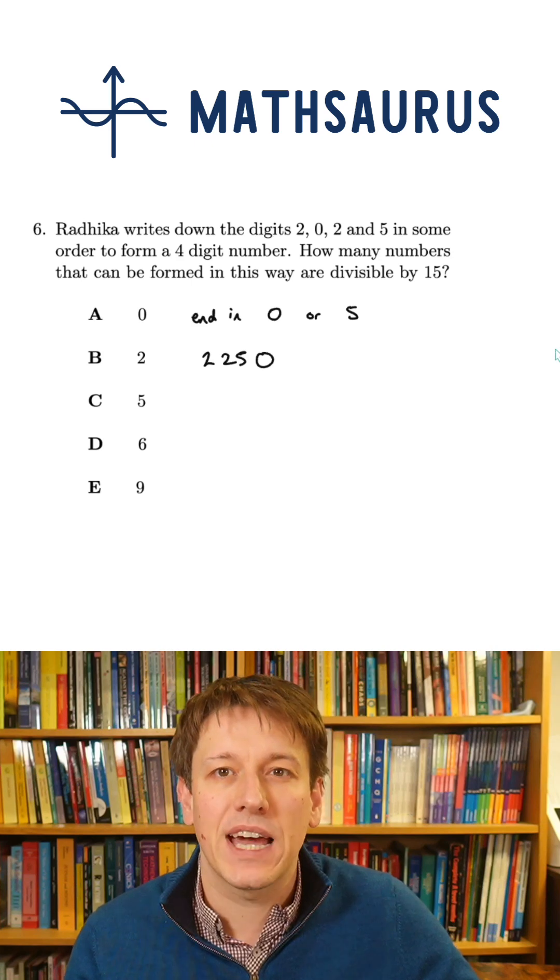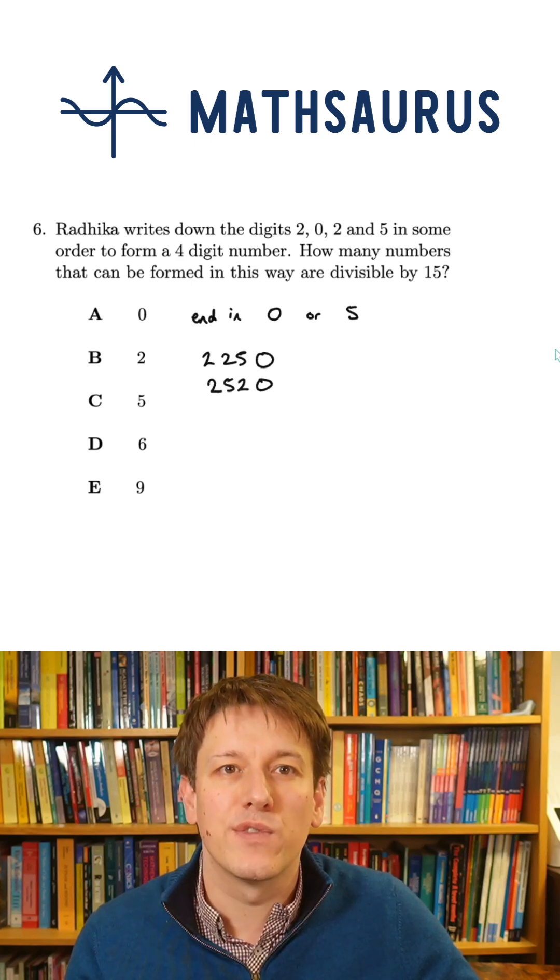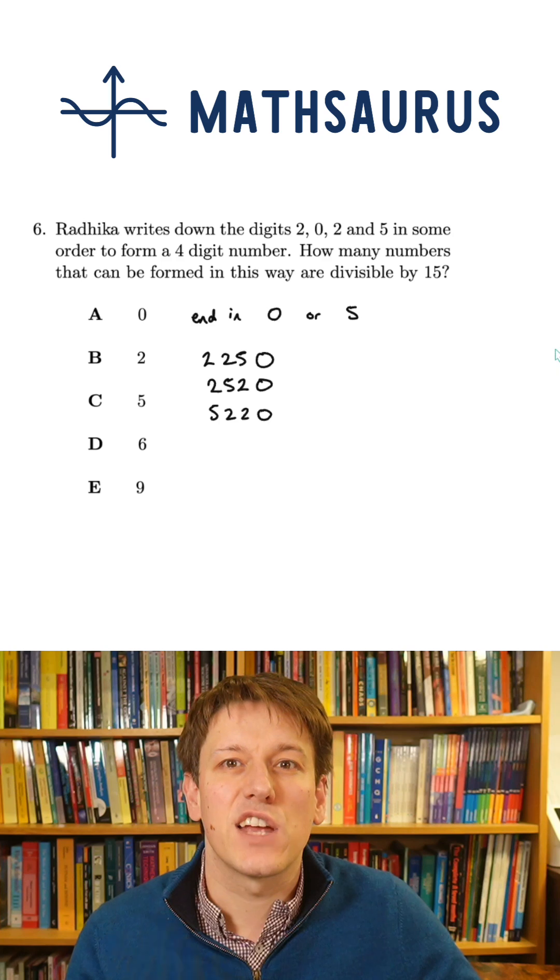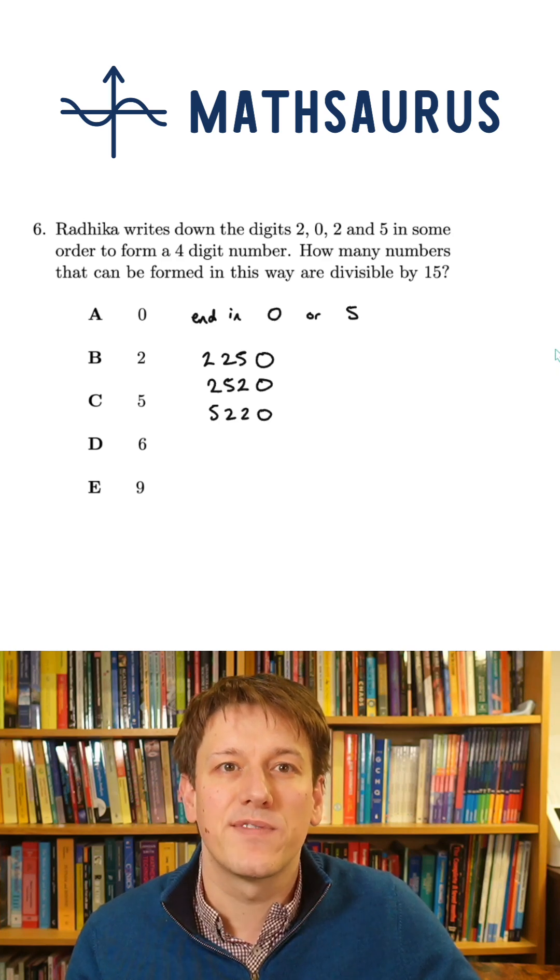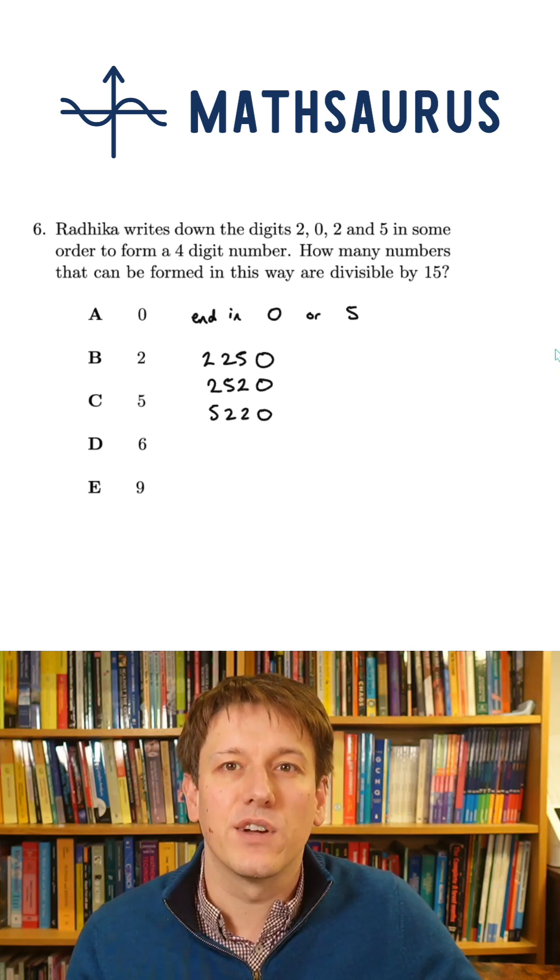If we are ending in a 0, we could have 2250, 2520, or 5220. Essentially, I've just got three choices as to where to put the 5 and the other slots are going to be filled up with the 2s.